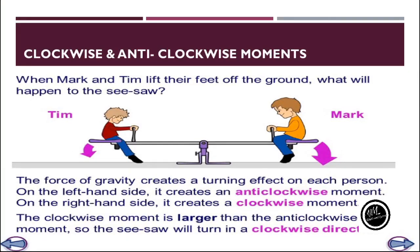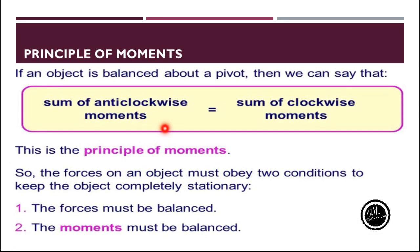Let's say both bodies produce the same amount of torque but in opposite directions. Then these torques will cancel the effect of each other and the seesaw will be balanced. What will happen if the two torques are not equal? If the torque produced in the clockwise direction is greater than the torque produced in the anticlockwise direction, then the seesaw will rotate in the clockwise direction. If an object is balanced about its pivot or axis of rotation, we can say that the sum of clockwise moments equals the sum of anticlockwise moments, and this principle is known as the principle of moments.